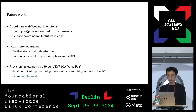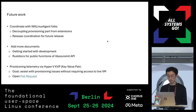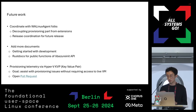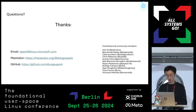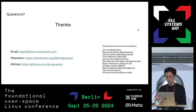Future work includes first coordinating with the WA Linux agent folks — the WA agent needs to be decoupled from the extension path. Then we need to do release coordination for our future releases. We also need to add more documentation, both normal development docs and Rust API docs (native Rust doc format). Finally, provisioning telemetry is another new planned feature, whose goal is to assist with provisioning issues without requiring access to the remote VMs. There is an open pull request for that. Huge kudos to community members and contributors on this project.